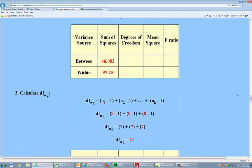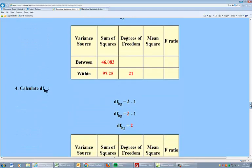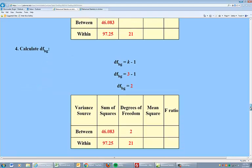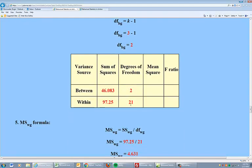The rest is easy. Degrees of freedom for within groups is 21: 8 minus 1, 8 plus 8 minus 1, plus 8 minus 1. And we know that degrees of freedom for between groups is just k minus 1, so we can put the three groups minus 1 or 2 right in there. We're good to go.